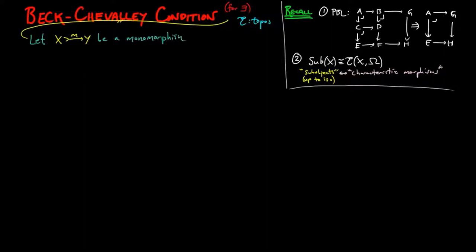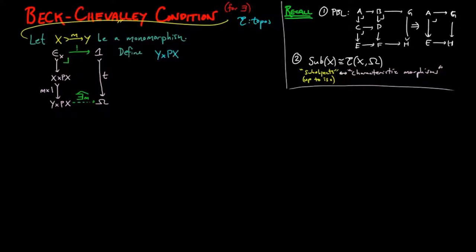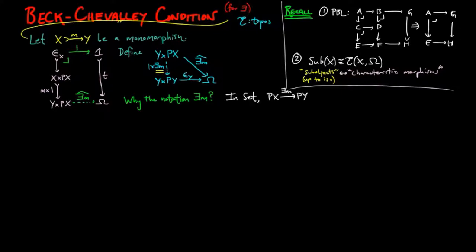We let m be a monomorphism. Then the composition of the membership relation and m cross 1 is a monomorphism, and thus is classified by a morphism ∃m-hat. We define the morphism ∃m as the exponential adjoint to this morphism. In the category of sets, ∃m is the set map taking a subset E of X to the set of little y such that there exists an x in E with mx equal to y — in other words, ∃m is the direct image assignment.